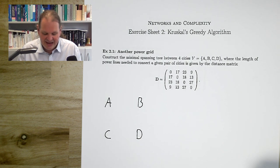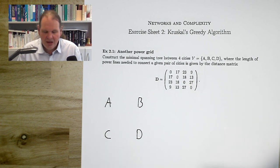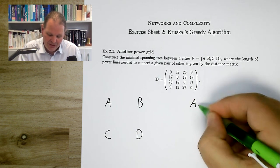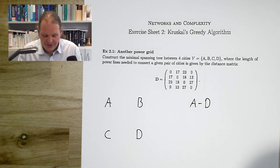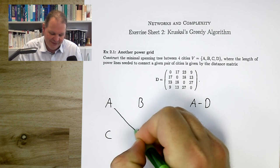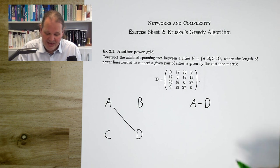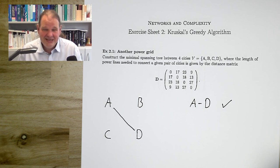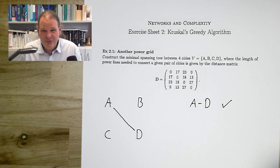Now that we have the nodes placed, we can start looking at individual links. The shortest link is nine kilometers — that's position 1,4 or 4,1 in our matrix, meaning a link from A to D. Should we build this link? Yes, because we had four components and now we have only three. I'm making a list here of the links I consider, which creates a record of how you proceeded rather than just having the result. This helps you find errors and gives your lecturer a chance to spot exactly where you went wrong.